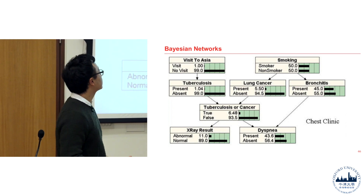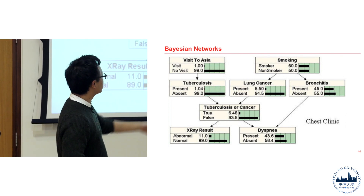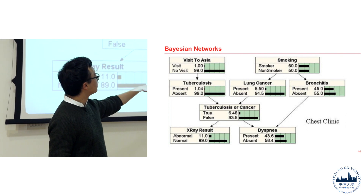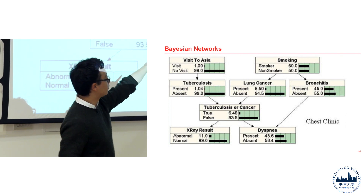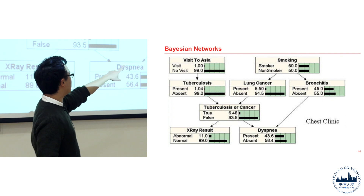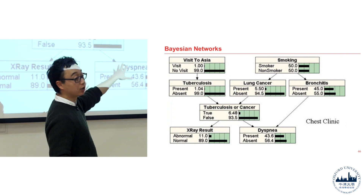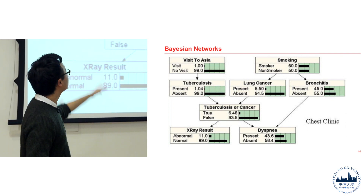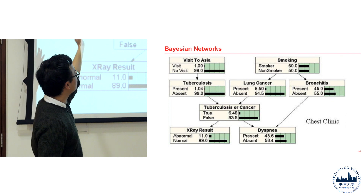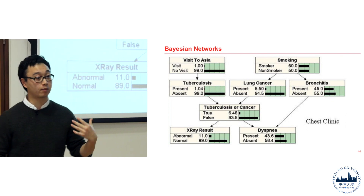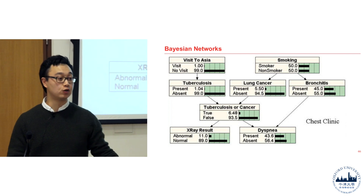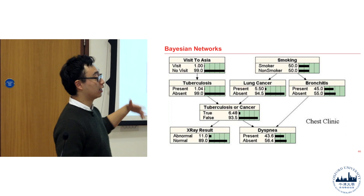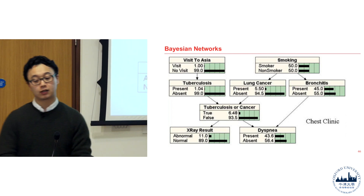In the medical example, dyspnea represents difficulty in breathing. If you have bronchitis in the upper right, that has some causality into dyspnea. Each of the longer black rectangles represents the probability of having a certain symptom or disease based on the other variables.